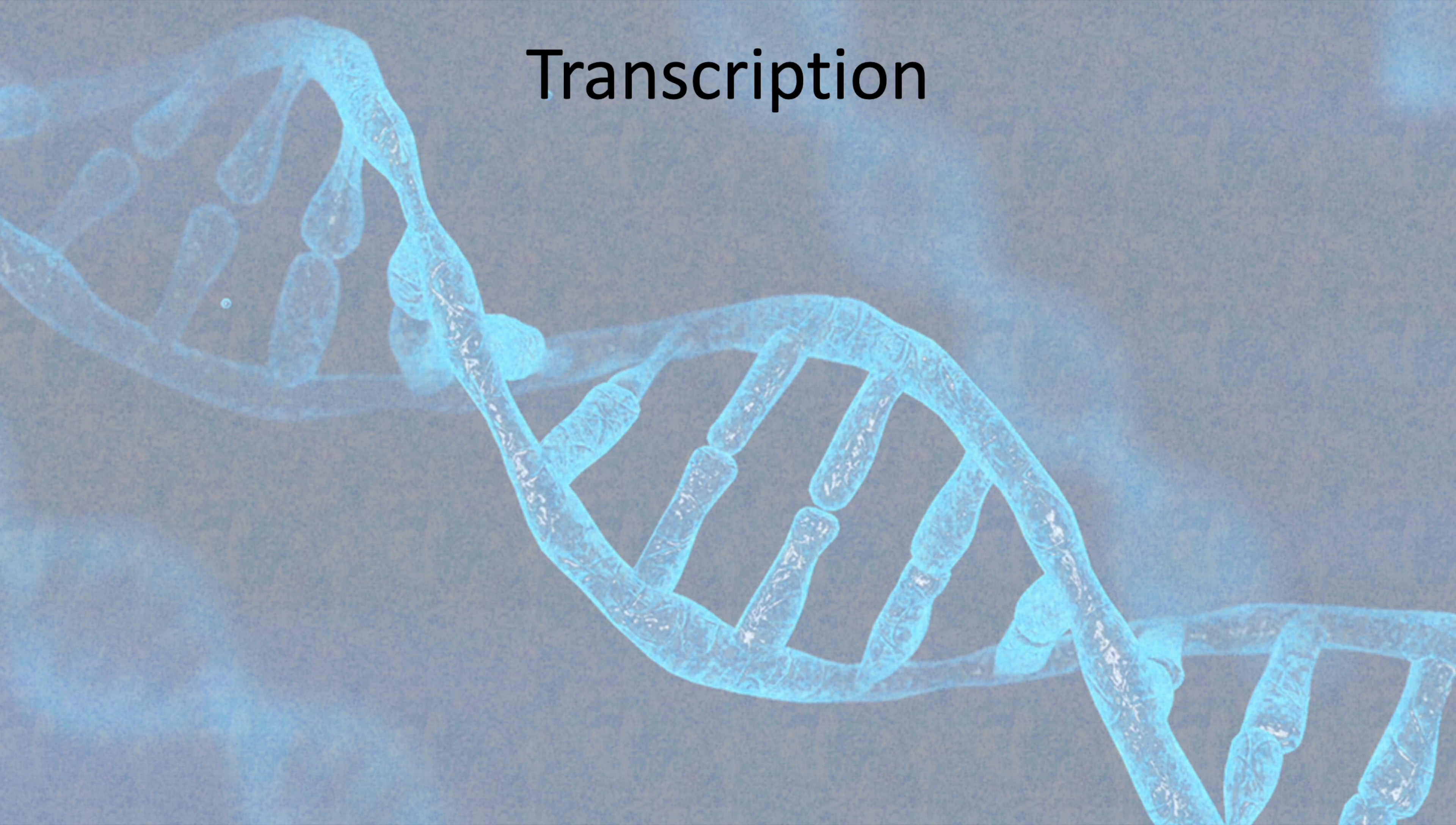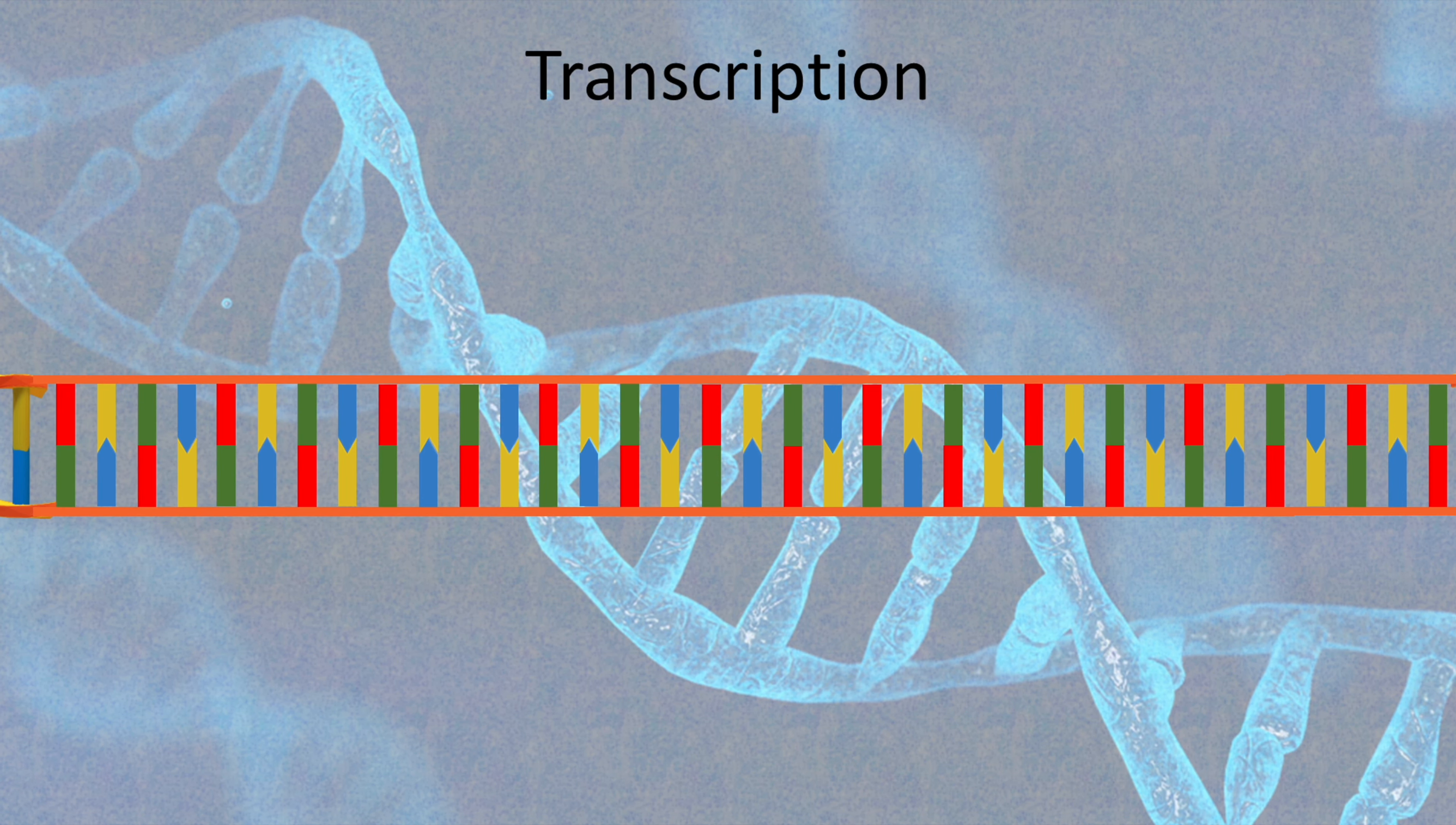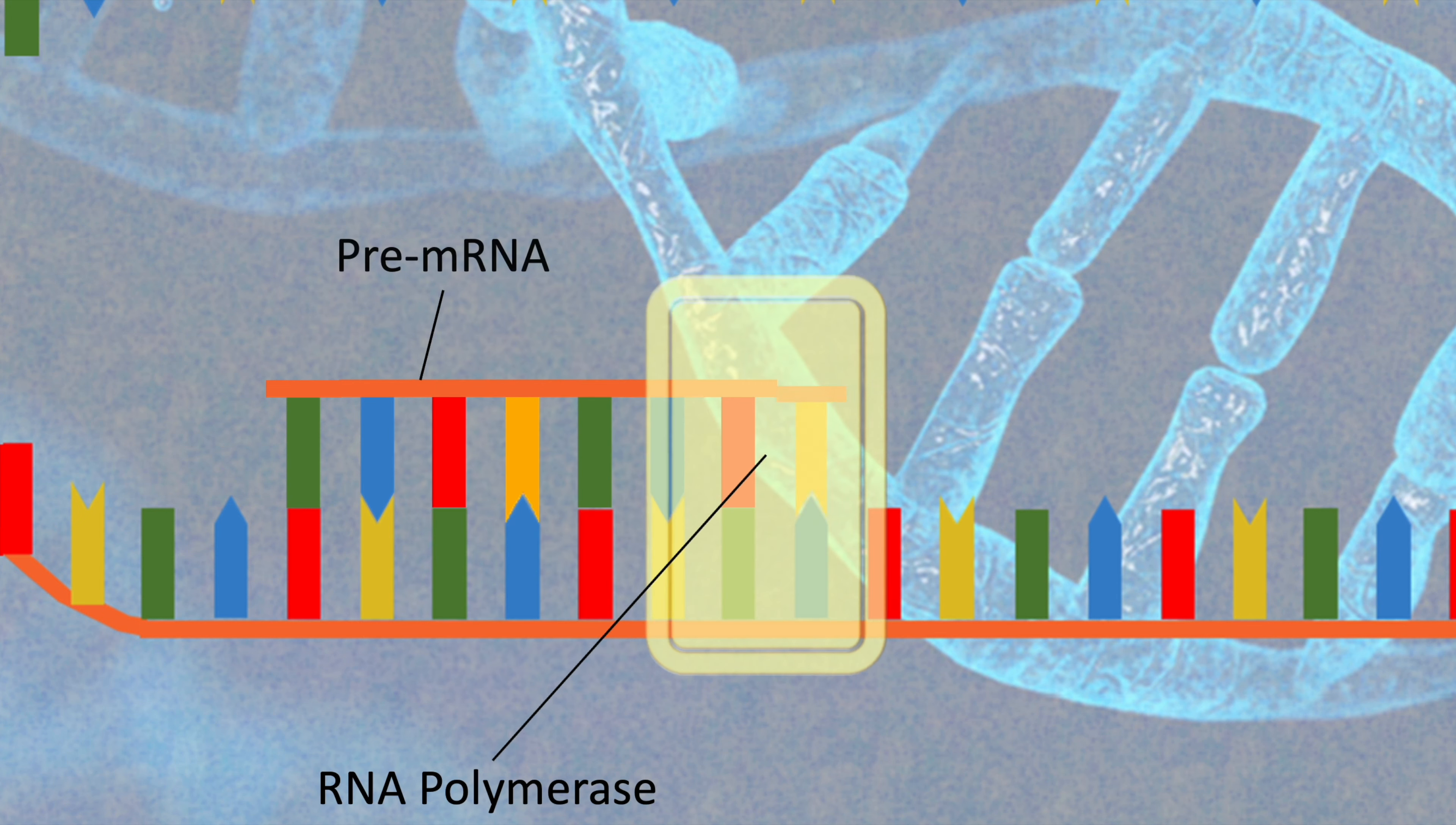Transcription. It is the first step of protein synthesis in which strands of DNA are copied into messenger RNA. In this process, which happens in the nucleus, the DNA is unzipped and an enzyme called RNA polymerase moves along the unwound DNA producing pre-mRNA.